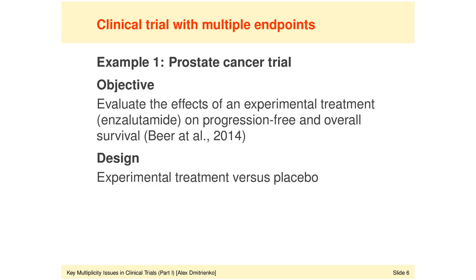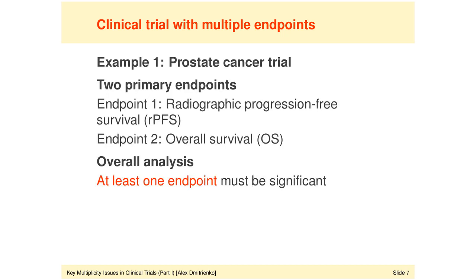Beginning with example one, this case study is based on a phase three trial recently conducted to study the effects of a novel treatment — enzalutamide — in patients with metastatic castration-resistant prostate cancer in whom the disease progressed after chemotherapy. The trial's design is very straightforward: there is just a single dose of this experimental treatment versus placebo, which is in reality the best supportive care, so there are no multiple comparisons. The efficacy profile is evaluated using two different endpoints.